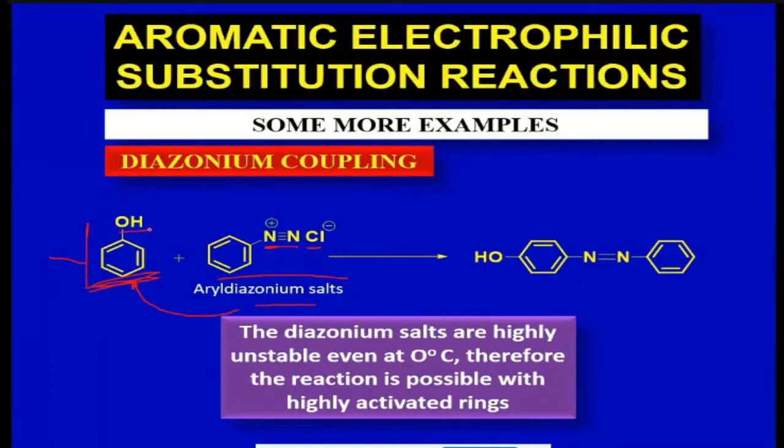Because OH has a plus M effect, the reaction can proceed with the second electrophile attached either at ortho or para positions. So it has two positions, ortho and para, upon which the second electrophile can get attached.